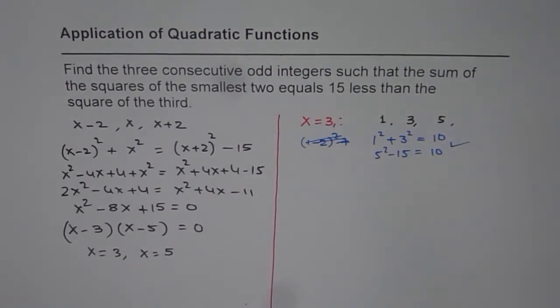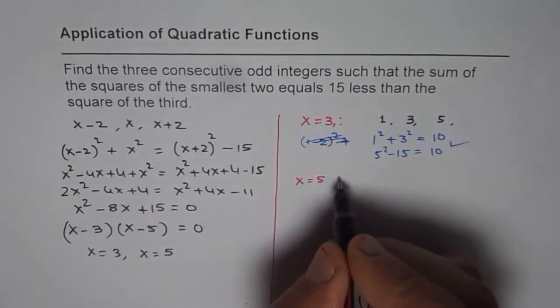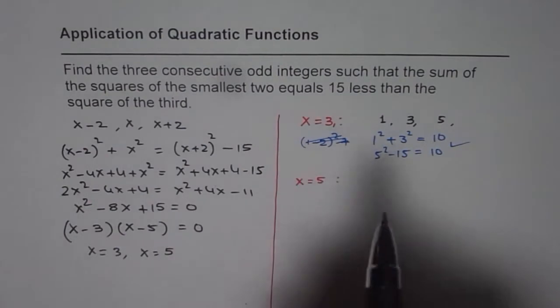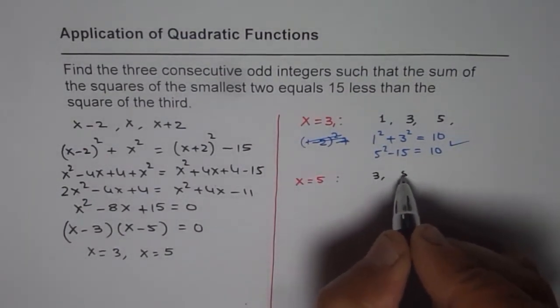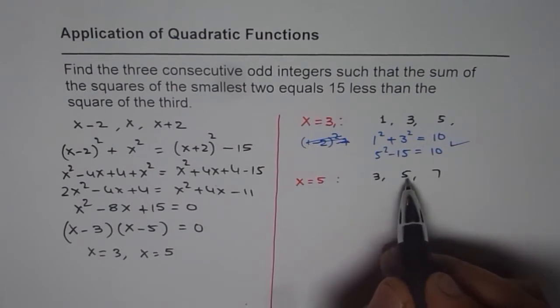So these are the right answers. The second one is x = 5. If x is 5, then the integers are 3 (x-2), 5, and 7. These are the lowest, middle, and highest.